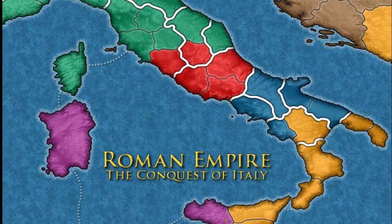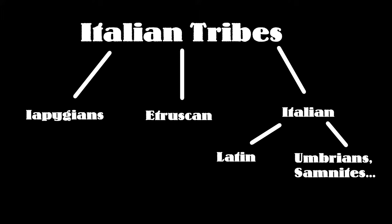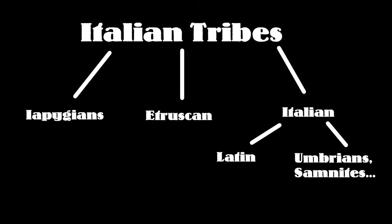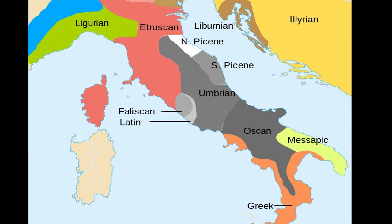Although the Latin tribe, Rome, was undoubtedly the most influential, renowned German ancient historian Theodor Mommsen divided the Italians into three original tribes: the Iapigian, Etruscan, and Italic tribe. However, the Italic tribe is again divided into two parts — on the one hand the Latin, and on the other hand tribes with different dialects, like the Umbrians, Marsi, Volsci, or Samnites — which were linguistically very similar. In the following picture, you can see the languages spoken by these tribes.